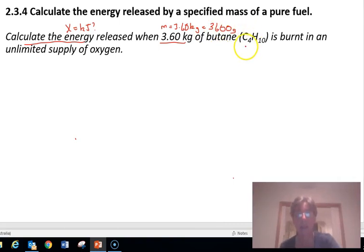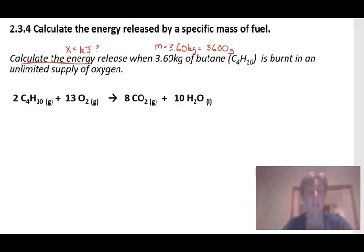We're combusting butane in an unlimited supply of oxygen. So this is a complete combustion reaction, so your products are going to be carbon dioxide and water. You need to write the combustion reaction for butane.